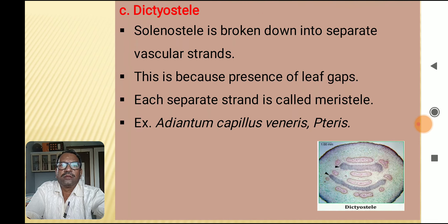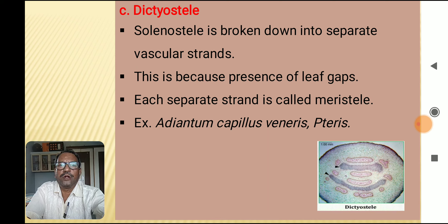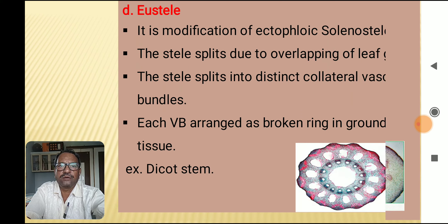The third type is dictyostele. In dictyostele, the solenostele is broken down into separate vascular strands due to the presence of leaf gaps. Each separate strand is called a meristele. It is present in Adiantum capillus-veneris and Pteris.